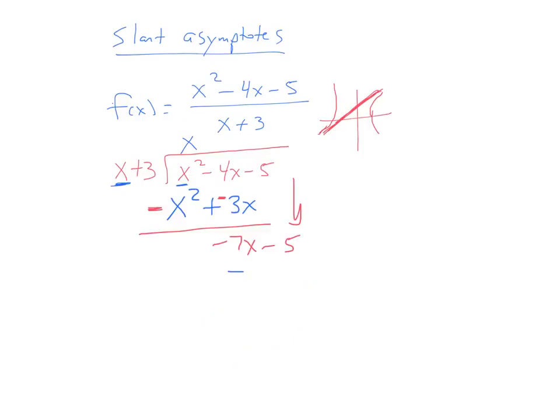So we're going to start that same process over again. What do you take x times to get negative 7x? Well, a negative 7. Then you take negative 7 times x and get negative 7x. And then you take negative 7 times 3 and get negative 21.